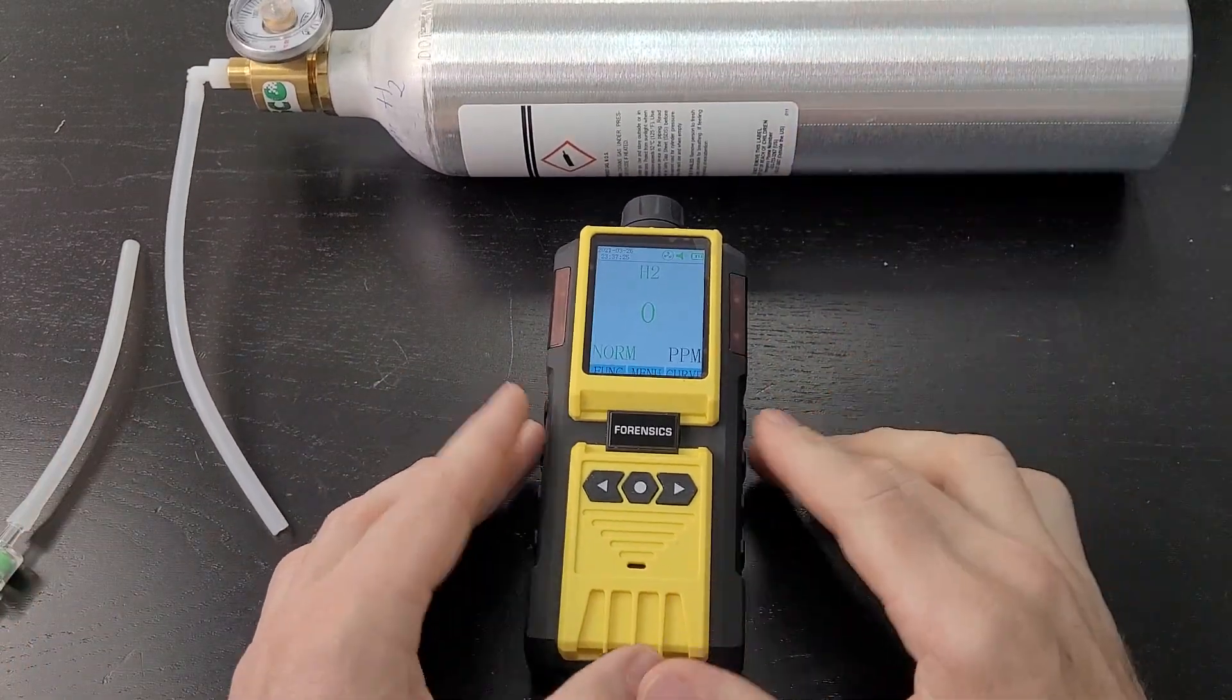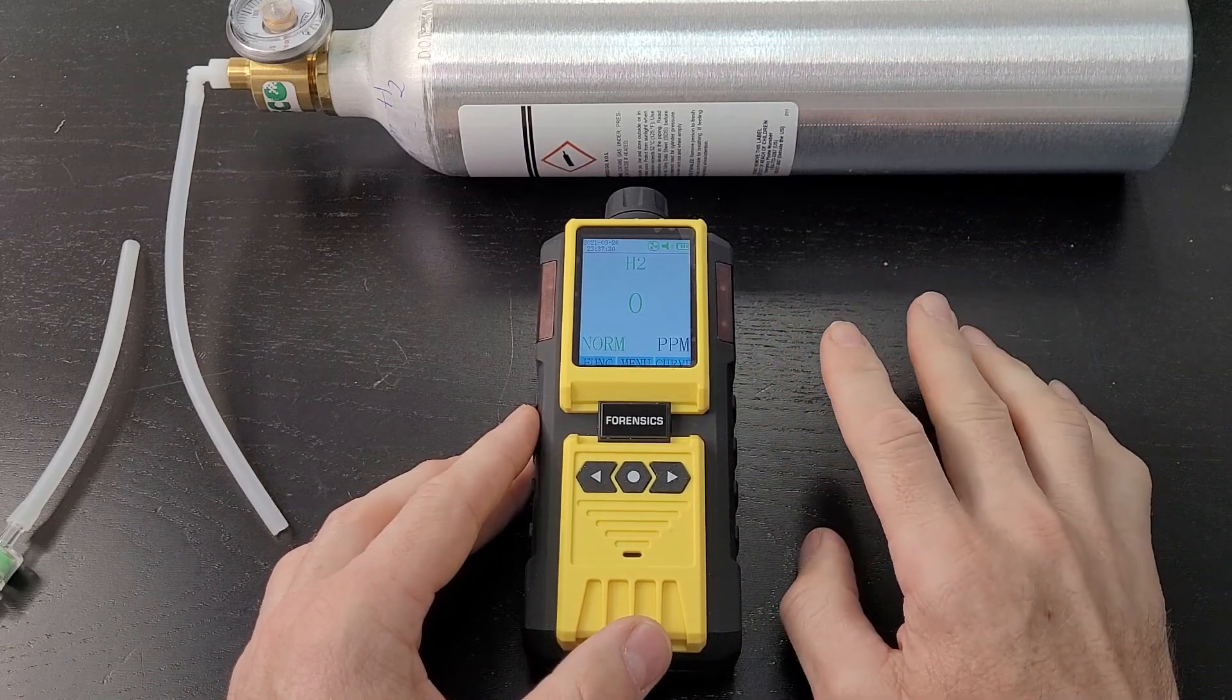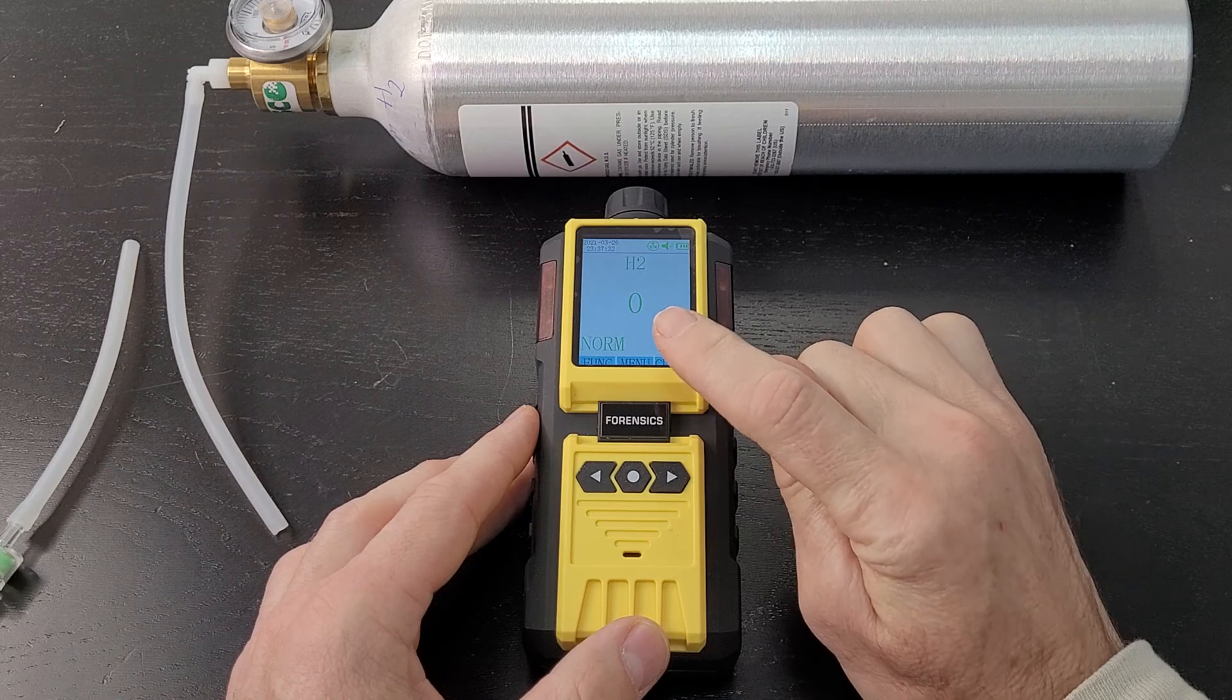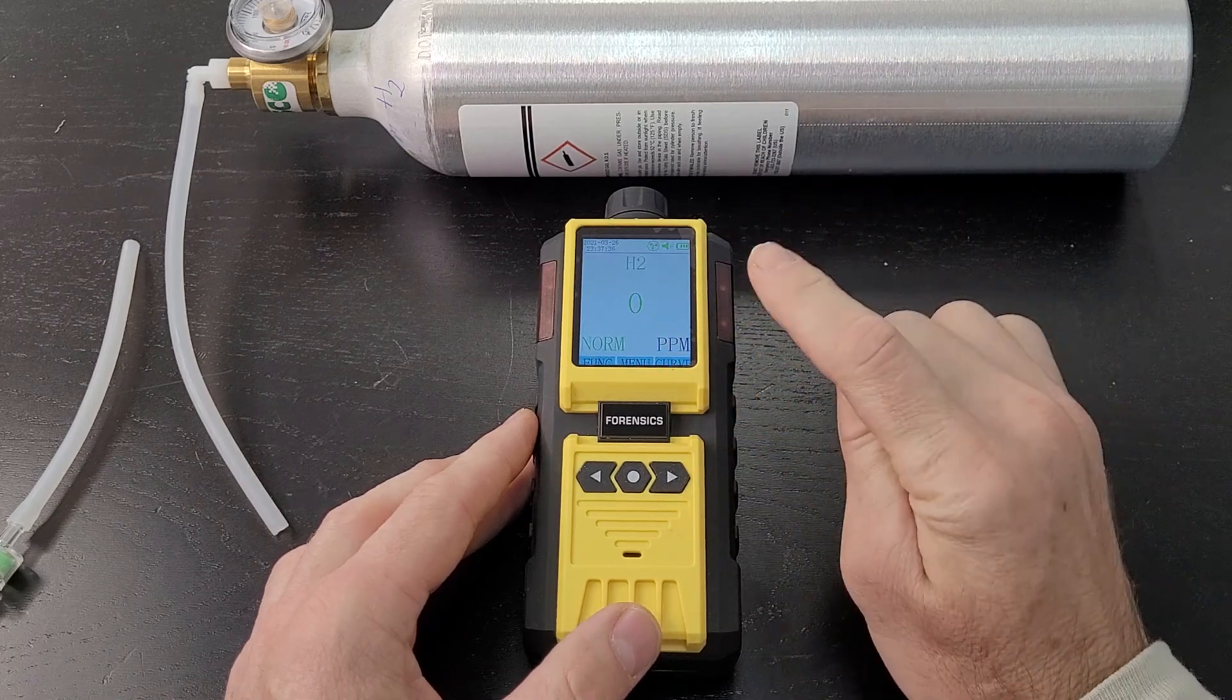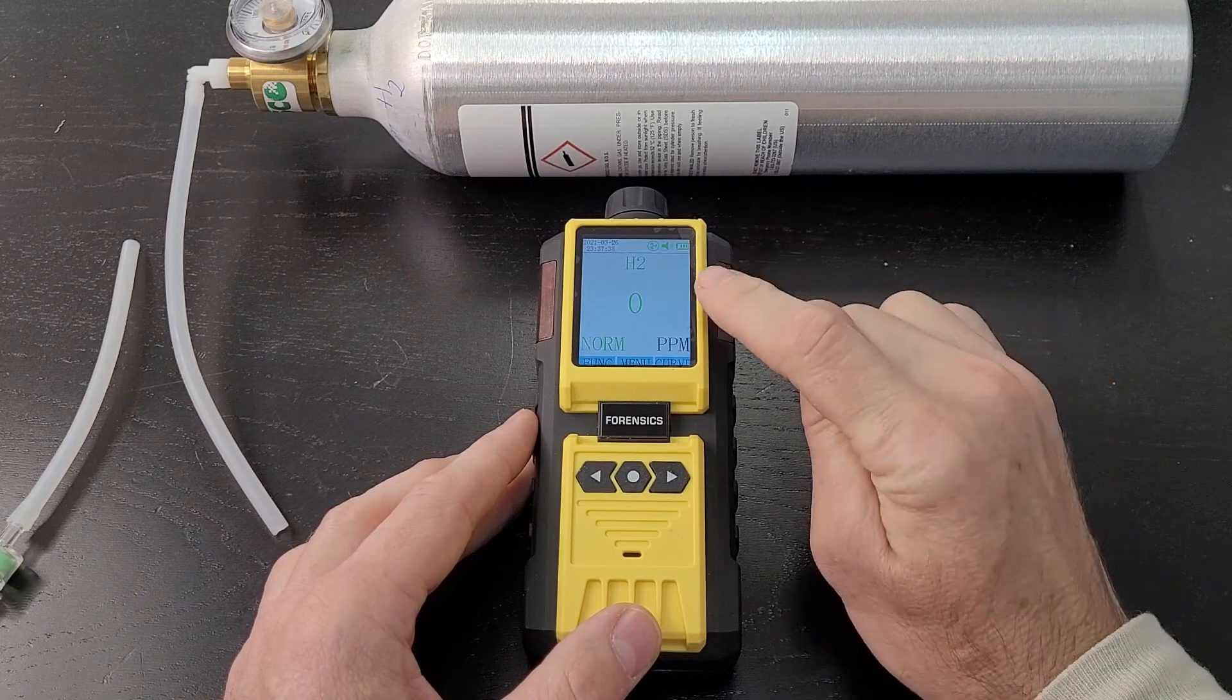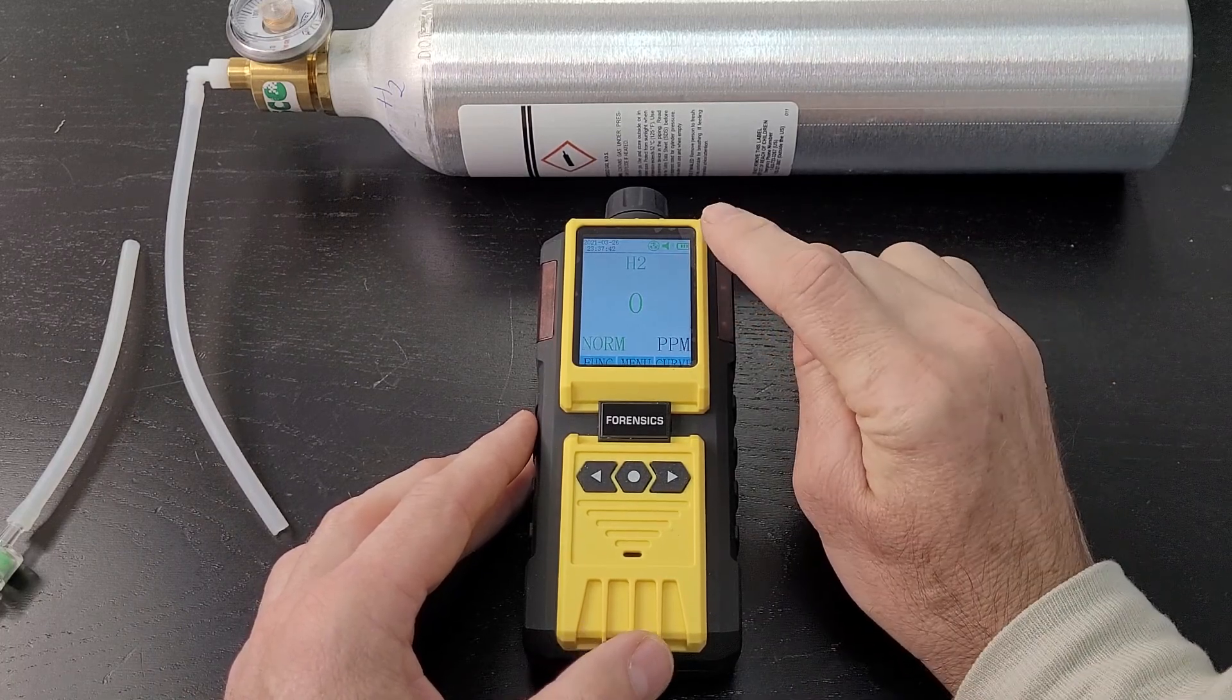Calibrating has two steps. First step is a zero calibration. We want to make sure the detector is reading zero in fresh air when it comes to gases such as hydrogen, carbon monoxide, hydrogen sulfide, and others.